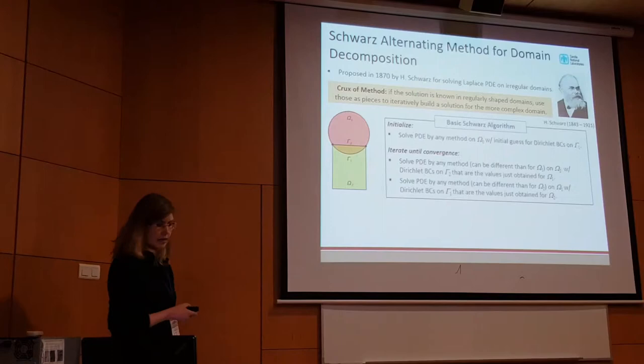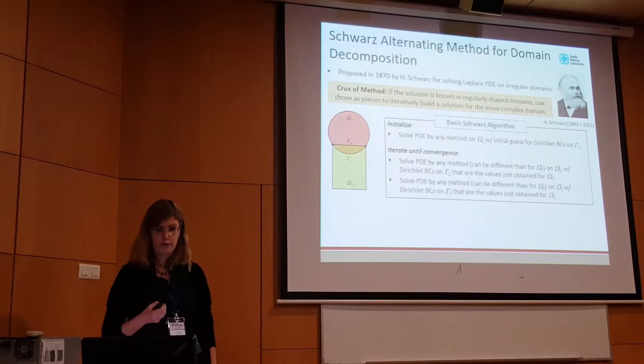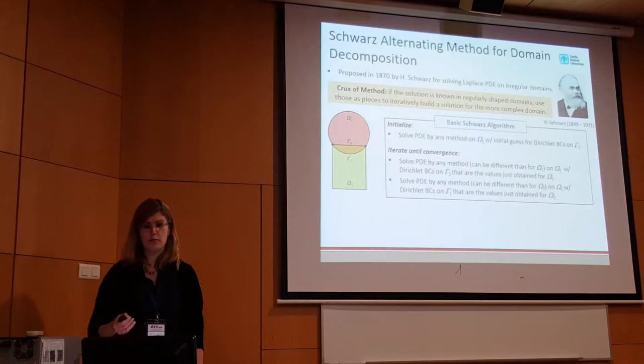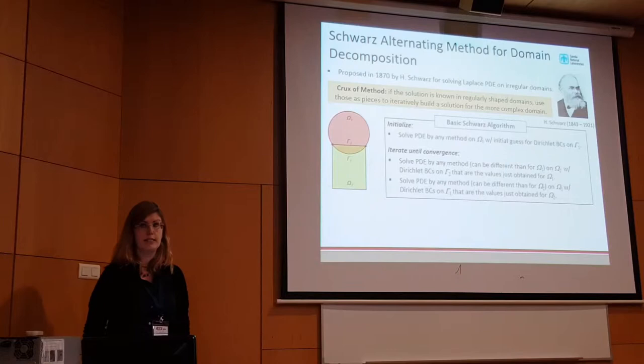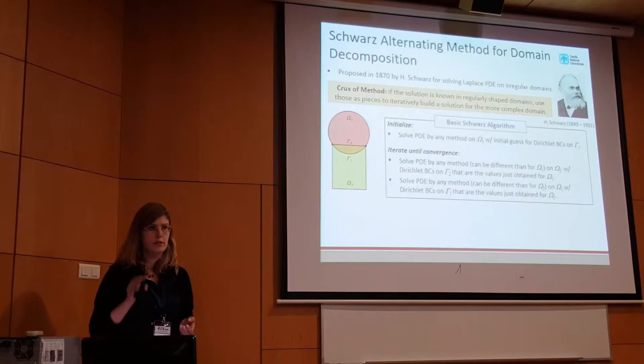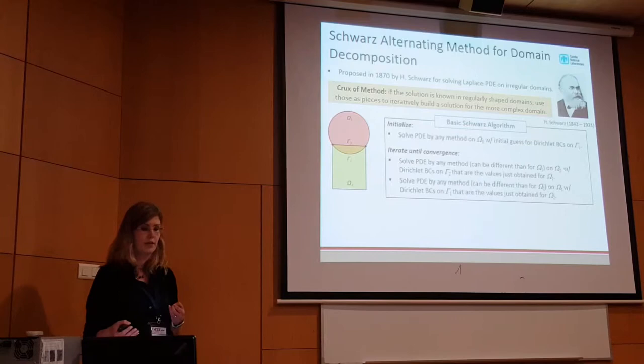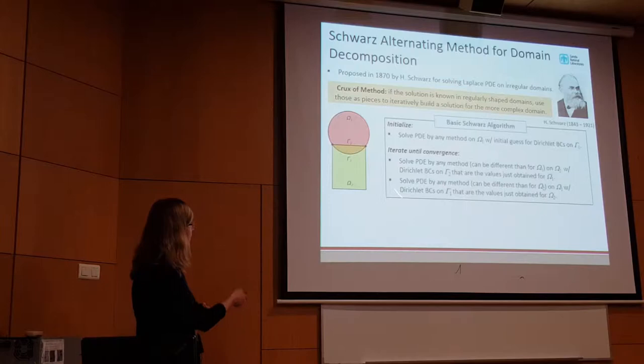As the title of the talk suggests, we're proposing to do this coupling using a formulation that leverages the Schwartz Alternating Method for Domain Decomposition. This method has been around for quite some time — proposed in 1870 by Herman Schwartz for solving the Laplace equation on an irregular domain. It's based on a simple idea: if you want to solve your problem on a complex domain, you decompose it into simpler subdomains and use solutions on those simpler subdomains to iteratively build your solution on the more complex domain.